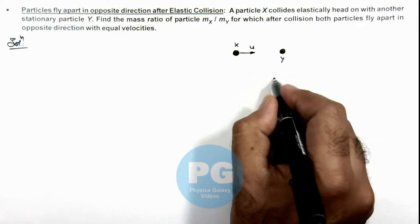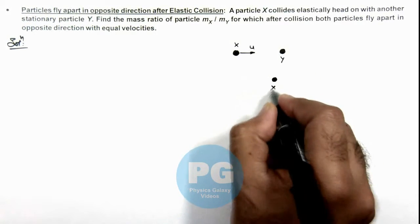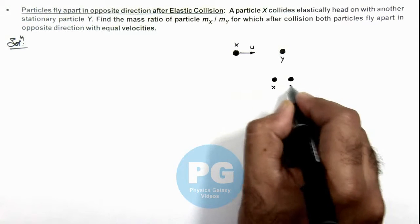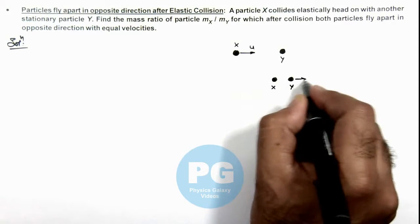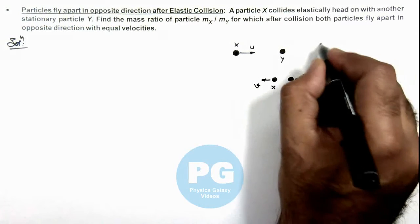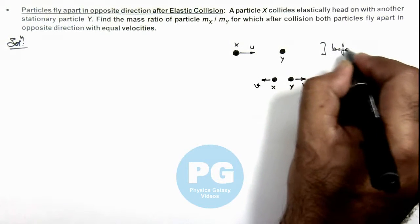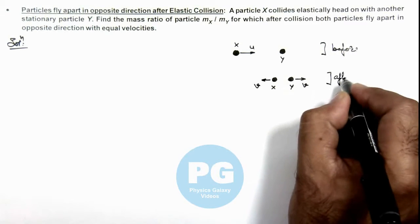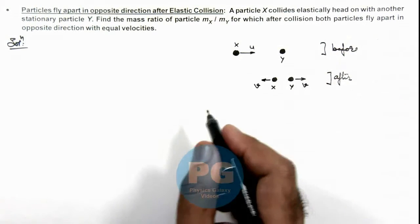And after collision both X and Y, they fly apart in opposite direction with the velocities v and v. This is the situation which is before collision and this is the situation which is analyzed after collision as given in the problem.